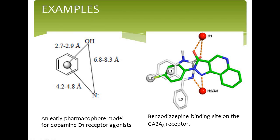Coming to the examples, this is an early Pharmacophore model for the Dopamine D1 receptor agonist. In this Pharmacophore model, there is a presence of amine nitrogen, a hydroxyl group and an aromatic ring, with the distance between the nitrogen and oxygen being 6.8 to 8.3 angstrom, and the distance between the aromatic ring and the oxygen being 2.7 to 2.9 angstrom. This model led to the discovery of a constrained analog of dopamine, A68930, a ligand which is highly selective for the D1 receptor, which had been synthesized earlier for a project targeting adrenergic receptor.